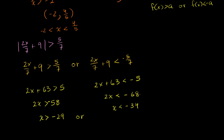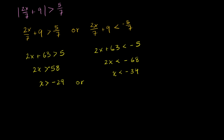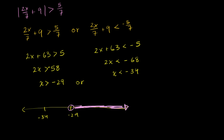Negative 68 divided by 2 is negative 34. So on the number line, the solution set looks like this: with negative 29 and negative 34 marked, x can either be greater than negative 29 — not greater than or equal to — or less than negative 34. Any of those values are going to satisfy this absolute value inequality.